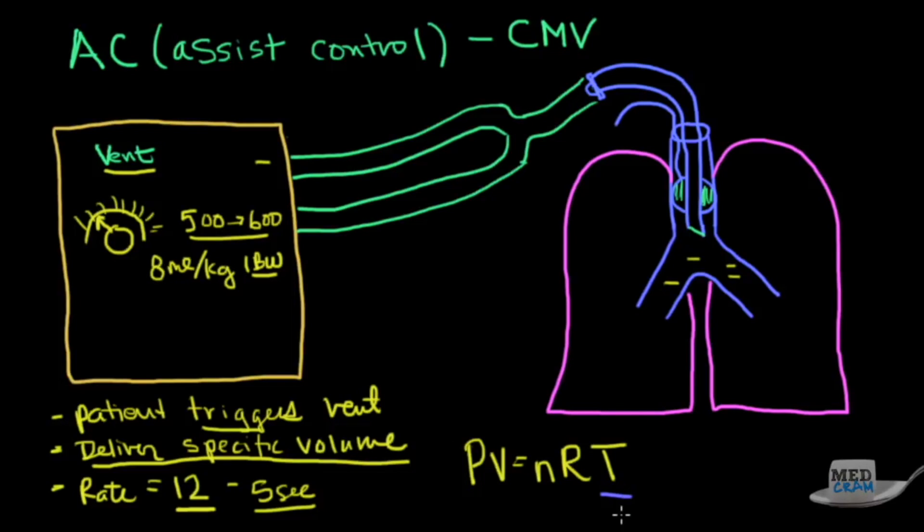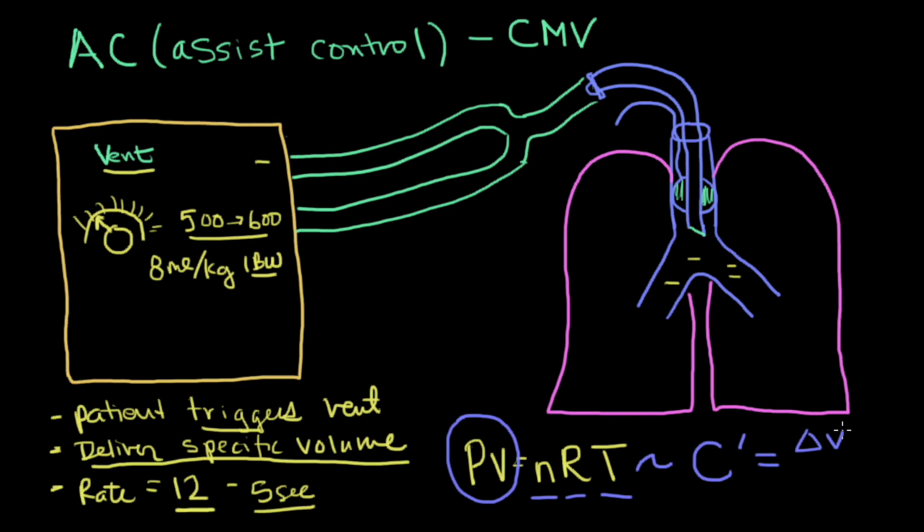Now, there's something that you should understand about this which is very important. You may recall from chemistry an equation that says PV equals NRT. Now, in this system, temperature is constant. R, of course, is always a constant. N is a constant. And so the thing that you must realize is that pressure and volume are inversely proportional to themselves. In other words, as the volume of a gas goes up, the pressure goes down if you have the same amount of gas. However, the other way of looking at this is compliance, which I'll abbreviate as a C. Compliance is equal to the change in volume over the change in pressure.